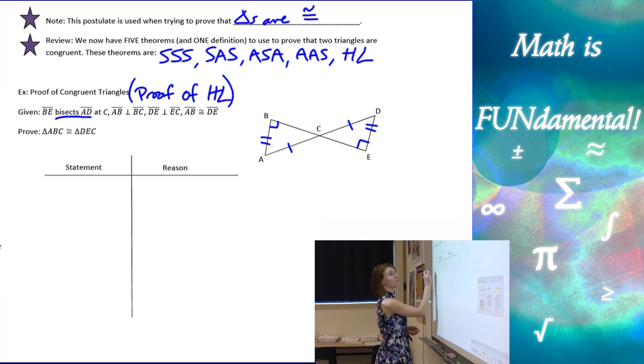What we're going to need to do is use other theorems to prove that this hypotenuse-leg theorem works. Let's start with our given information. I know it's a lot, but we've got to write it in there. BE bisects AD at C.